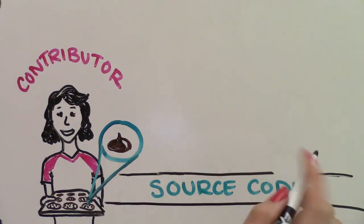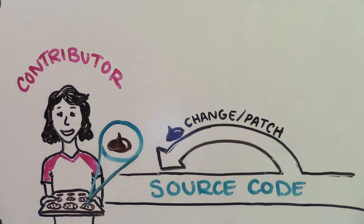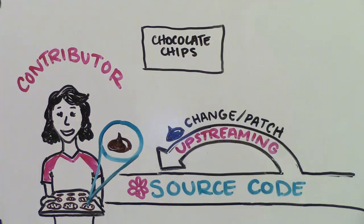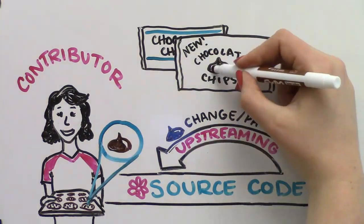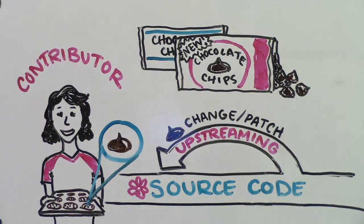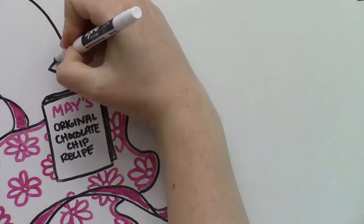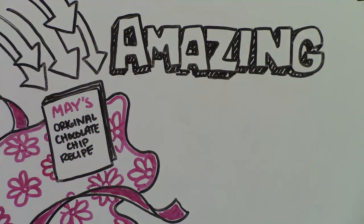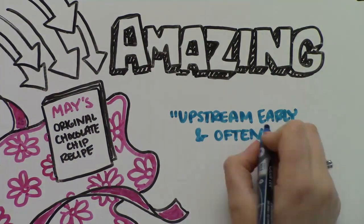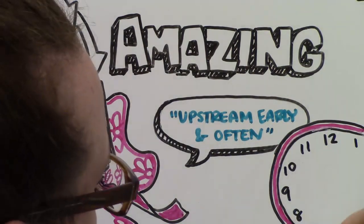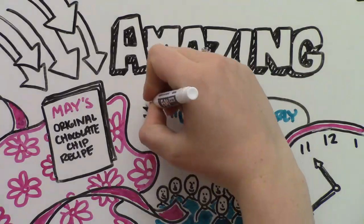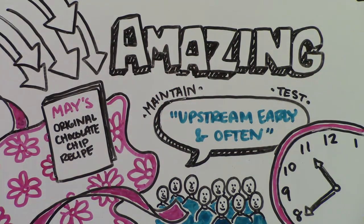In open source software development, this process of incorporating a change or patch into the original code is called upstreaming, because it's flowing back to the original source. If the original brand of chocolate chips becomes unavailable, Grandma May is responsible for updating the upstream chocolate chip patch with a new brand, because she accepted the patch. The benefits of incorporating your changes into the original recipe are pretty amazing, leading to the popular open source motto: upstream early and often. The sooner you upstream, the sooner the community can back you up — not only by maintaining the recipe, but also by testing it in as many configurations as there are community members using it.